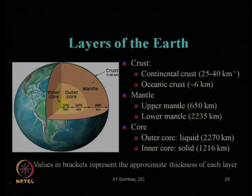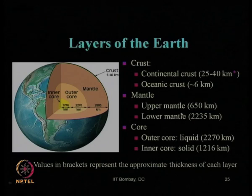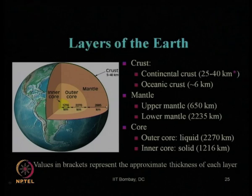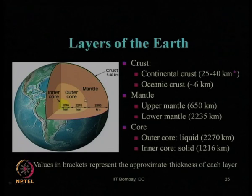The next part of the earth's interior is the mantle, which can be subdivided into two parts: the upper mantle, with a thickness of about 650 kilometers, and the lower mantle, with a thickness of about 2235 kilometers. All together, the thickness of the mantle is approximately 2885 kilometers. The upper mantle is close to the crust, and the lower mantle is adjacent to the core.